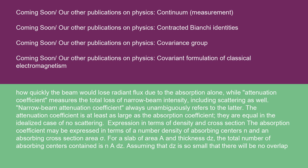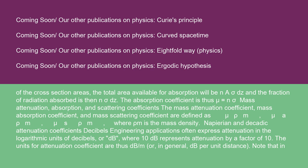Expression in terms of density and cross-section: the absorption coefficient may be expressed in terms of a number density of absorbing centers n and an absorbing cross-section area σ. For a slab of area A and thickness dz, the total number of absorbing centers contained is n·A·dz. Assuming dz is so small that there is no overlap of the cross-section areas, the total area available for absorption will be n·σ·A·dz, and the fraction of radiation absorbed is n·σ·dz. The absorption coefficient is thus μ = n·σ. Mass absorption coefficient and mass scattering coefficient are defined as μ/ρ_m and μ_s/ρ_m, where ρ_m is the mass density.